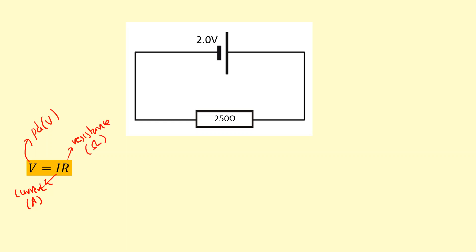So if I apply this now, if I rearrange this, I'll get I equals V over R. And in this case, V is 2 volts and R is 250 ohms.